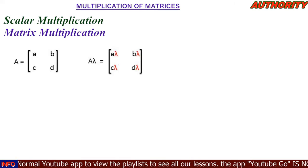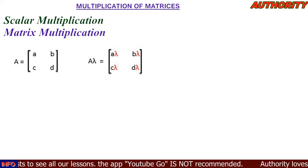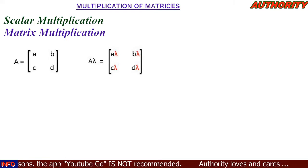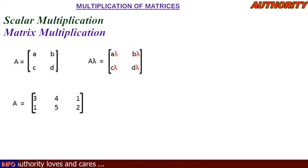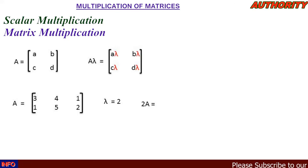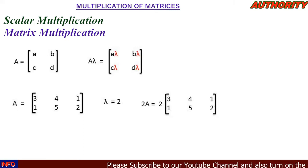When you have lambda multiplied by matrix A, that means you are going to use lambda to multiply every element of the matrix. So lambda multiplied by matrix A is equal to: lambda·a, lambda·b, lambda·c, lambda·d. Now we have a 3×2 matrix A and our scalar lambda equals 2, so we say 2 times A.